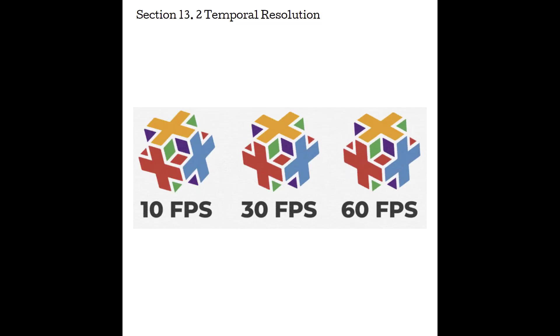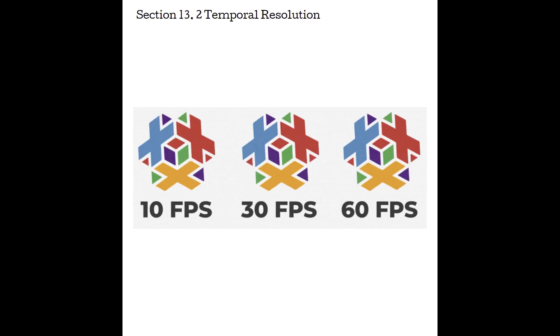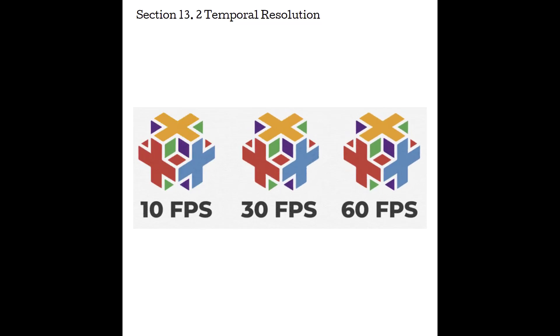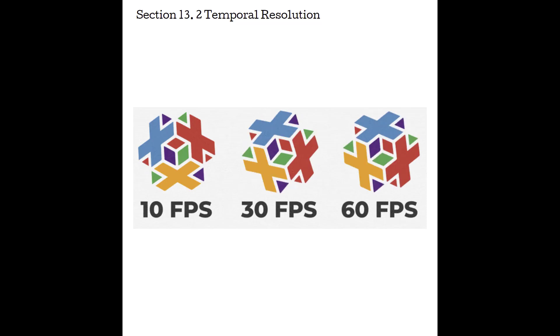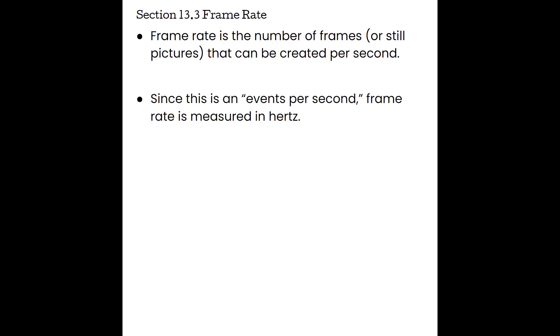If our temporal resolution is poor, we can't truly evaluate motion in the body. It will feel like our machine is either lagging behind our movements, or we'll miss a lot of the motion in anatomical structures. Section 13.3, frame rate. Frame rate is the number of frames or still pictures that can be created per second. Notice that this is an events-per-second unit, so the unit for frame rate is going to be hertz.